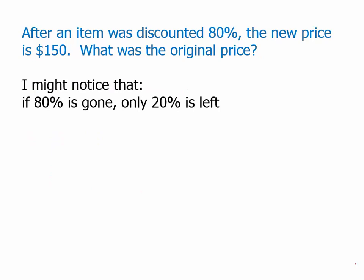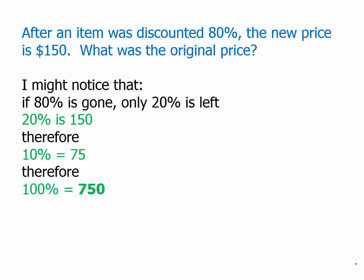Another way to think about it: I might notice that if 80% is gone, only 20% is left. So whatever the original price was, that $150 is 20% of that original price. Divide that by 2, and 10% is 75. Well, if 10% is 75, all I have to do is multiply that by 10. Therefore, the original price had to be 750.